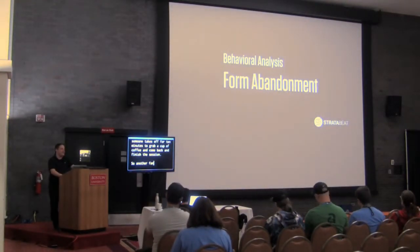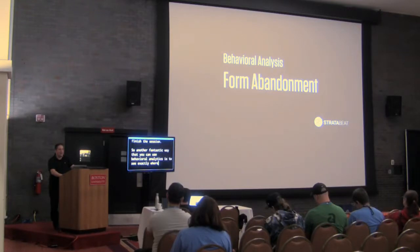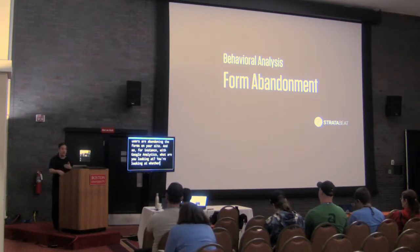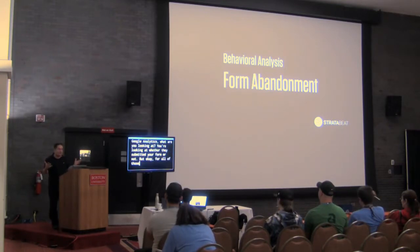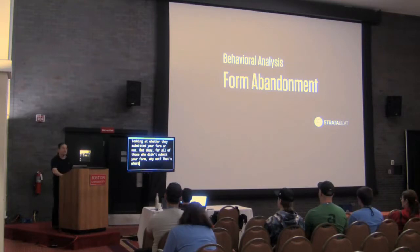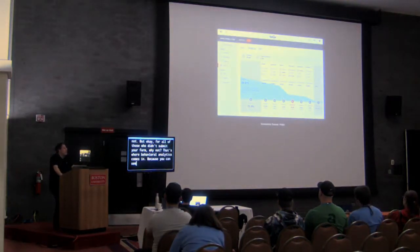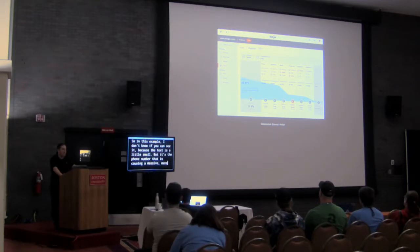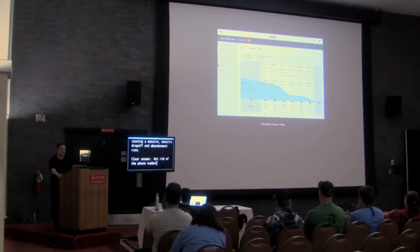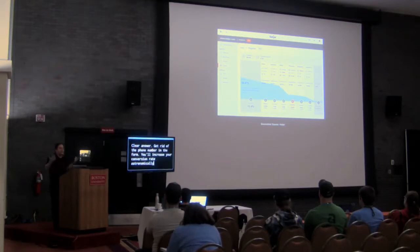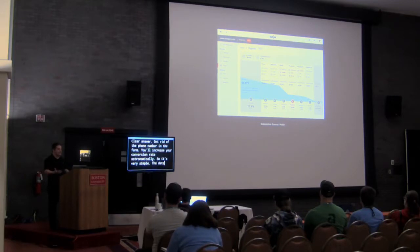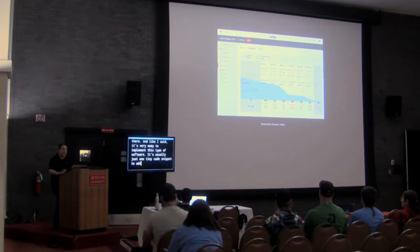Another fantastic capability is seeing exactly where your users are abandoning forms on your site. With Google Analytics you're just looking at whether they submitted your form or not. But for all those who didn't submit — why not? Behavioral analytics shows you exactly what's happening in each field. In this example, it's the phone number field that is causing a massive drop-off and abandonment rate. Clear answer: get rid of the phone number field and you'll increase your conversion rate astronomically. It's just one tiny code snippet to implement, but the insights are invaluable.